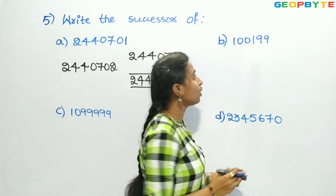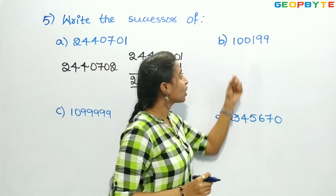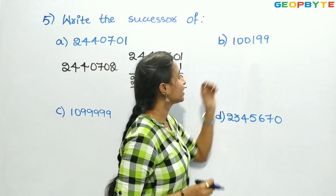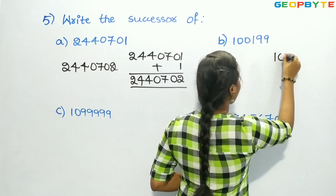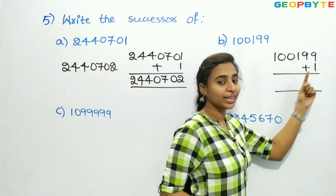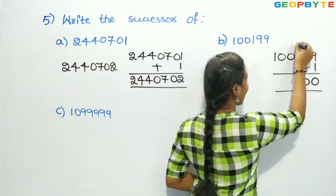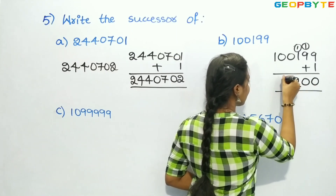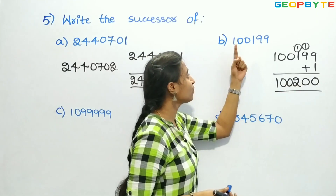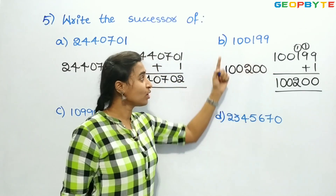Next, we have 1,00,199. Let us add 1: 9 plus 1 is 10 — write 0, carry 1. 9 plus 1 is 10 — write 0, carry 1. 1 plus 1 is 2. The remaining digits 0, 0, 1 stay the same. We got 1,00,200 as the successor of 1,00,199.